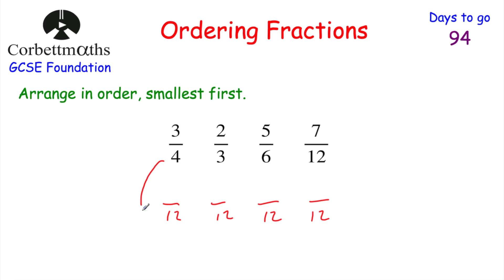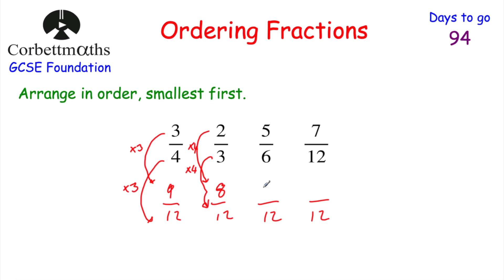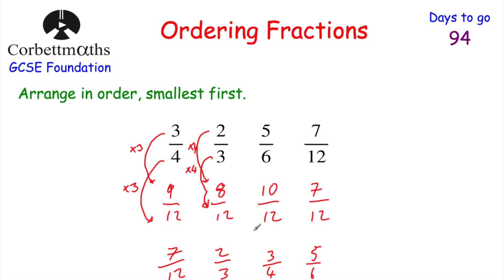Ordering by the numerators: 7 twelfths is smallest, then 8 twelfths (2 thirds), then 9 twelfths (3 quarters), then 10 twelfths (5 sixths) is largest. So in order starting with smallest: 7 twelfths, 2 thirds, 3 quarters, and 5 sixths.